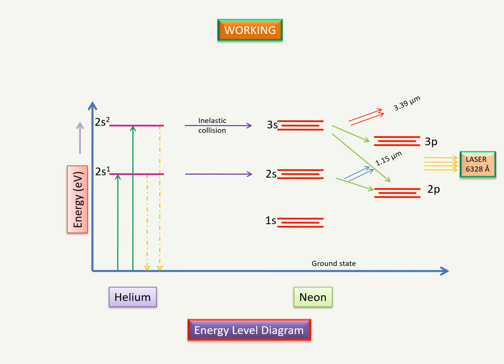The atoms undergo transition from 2p to 1s by spontaneous emission. The transition from 1s to ground level takes place by non-radiative process. Since the electron density in 3s and 2s levels of Neon is always greater than the other levels of Neon, we get continuous laser output of wavelength 6,328 angstrom with few milliwatt power.